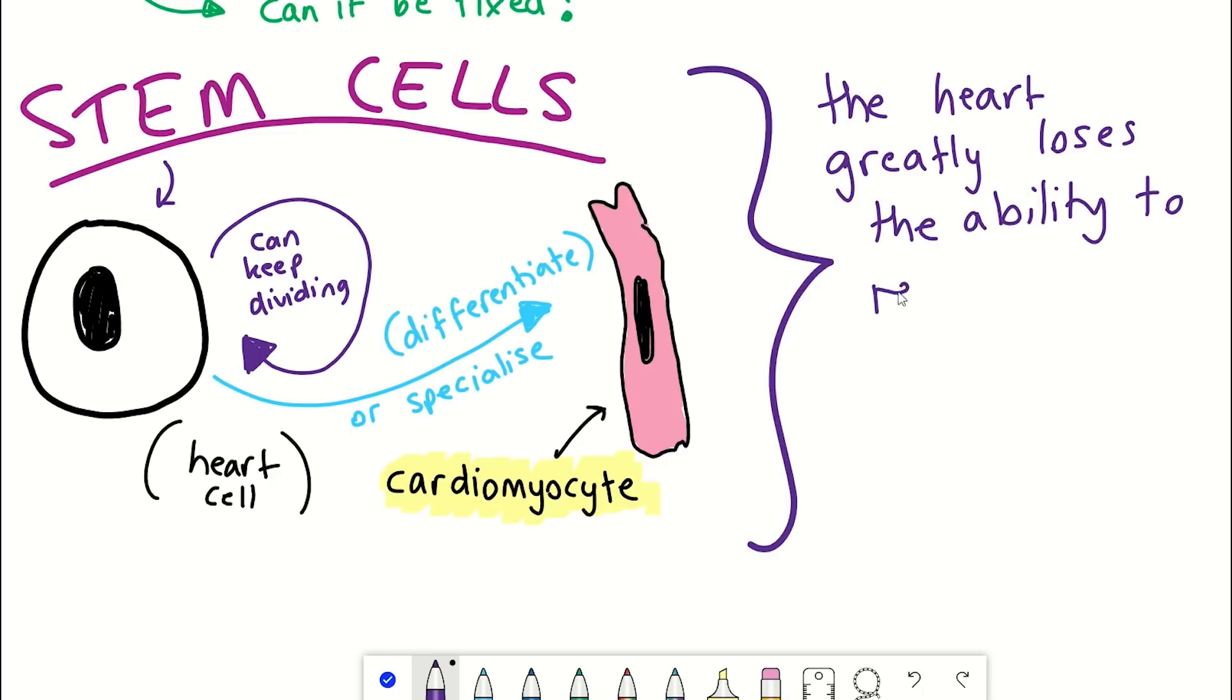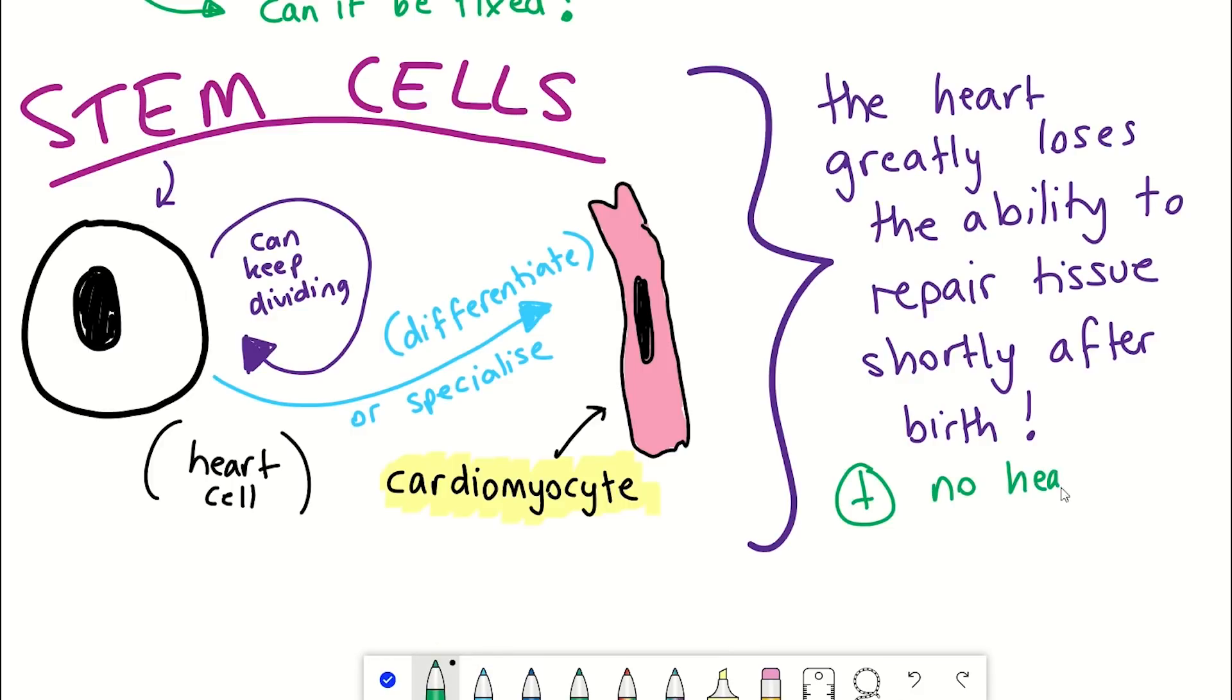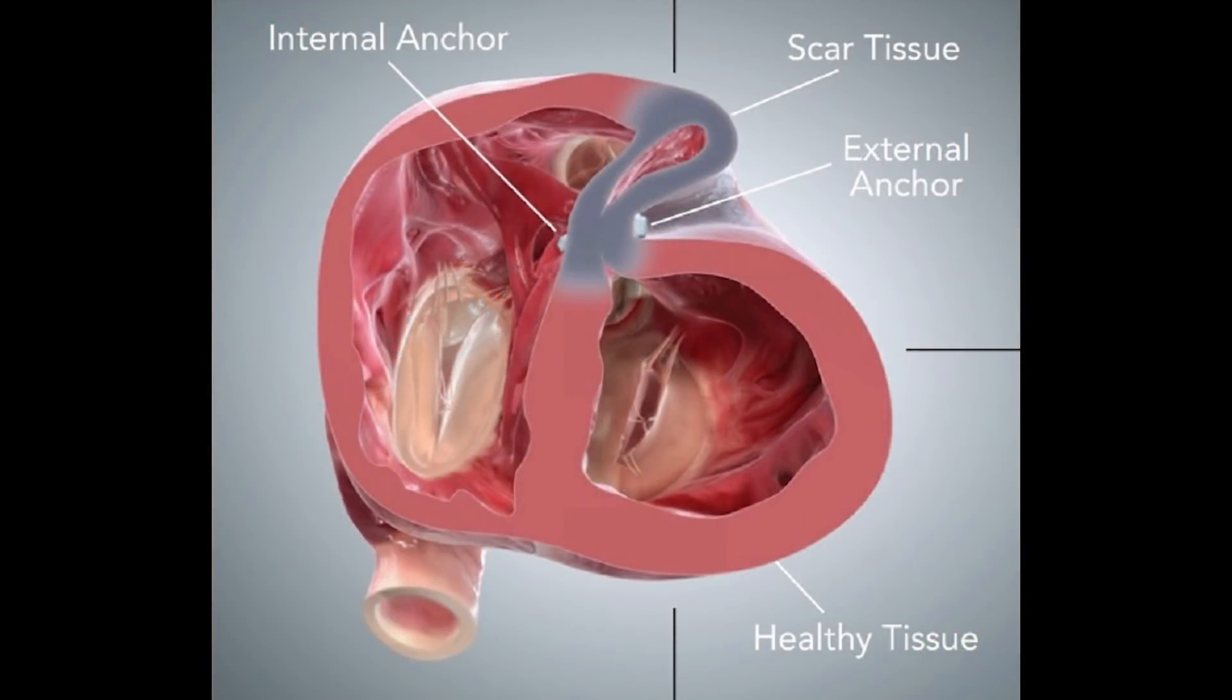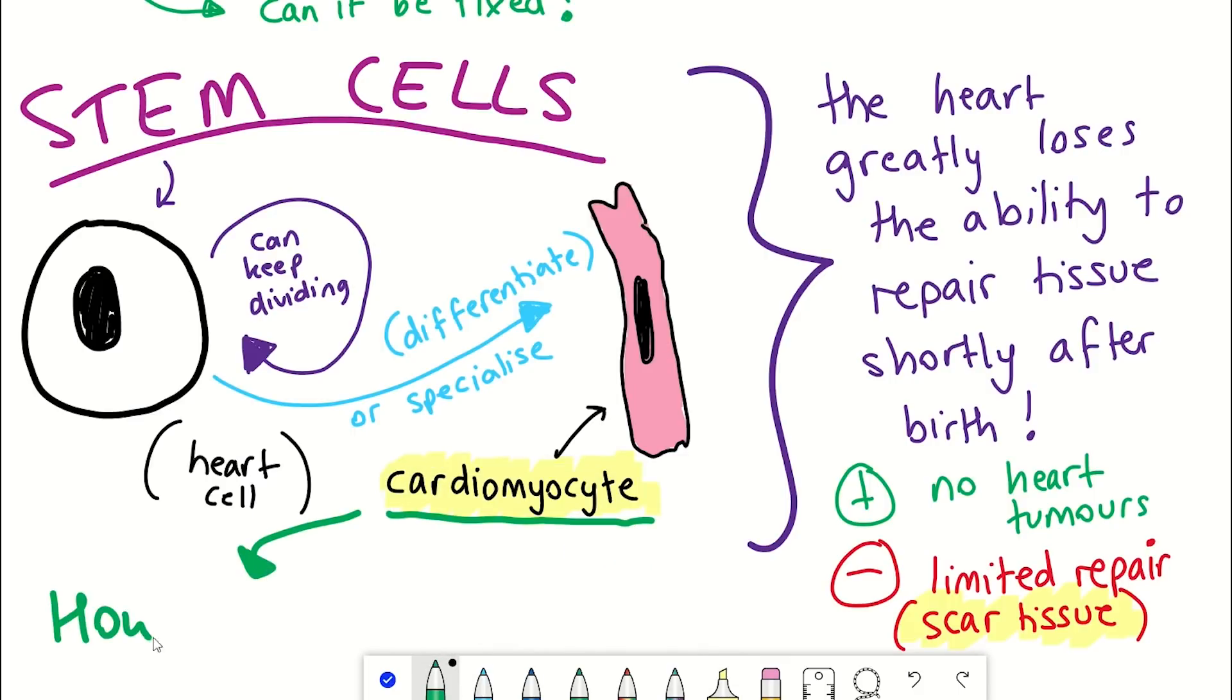Now, this could be the reason why we don't seem to see tumor formation in the heart, but since the cardiomyocytes can't be efficiently replaced, instead the damage is patched up with fibrotic scar, and this scar tissue reduces the functional capabilities of the heart. So the ideal solution would be to replace these cardiomyocytes or to form new ones. But how?